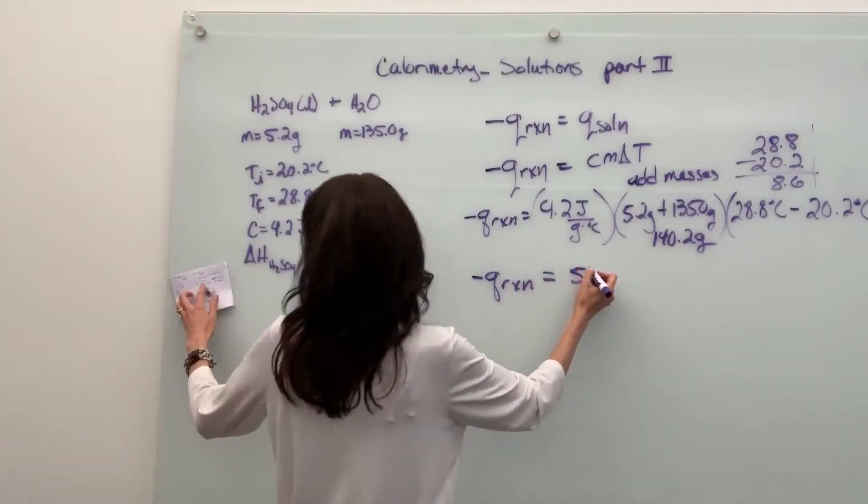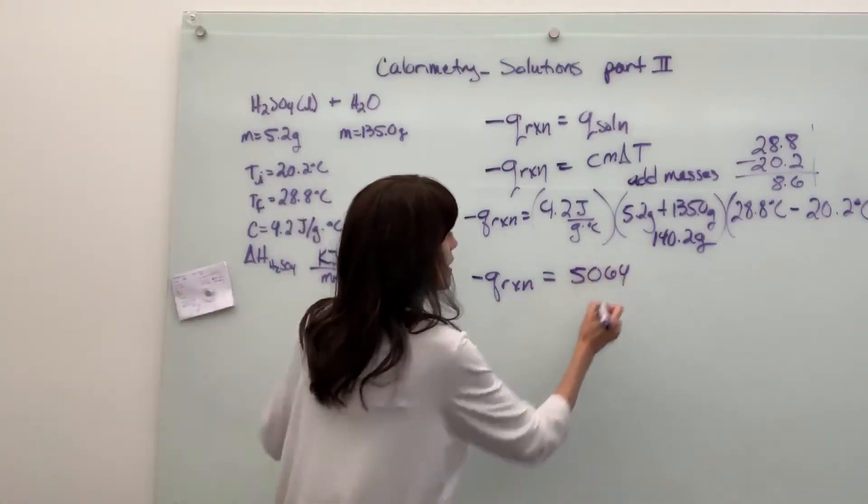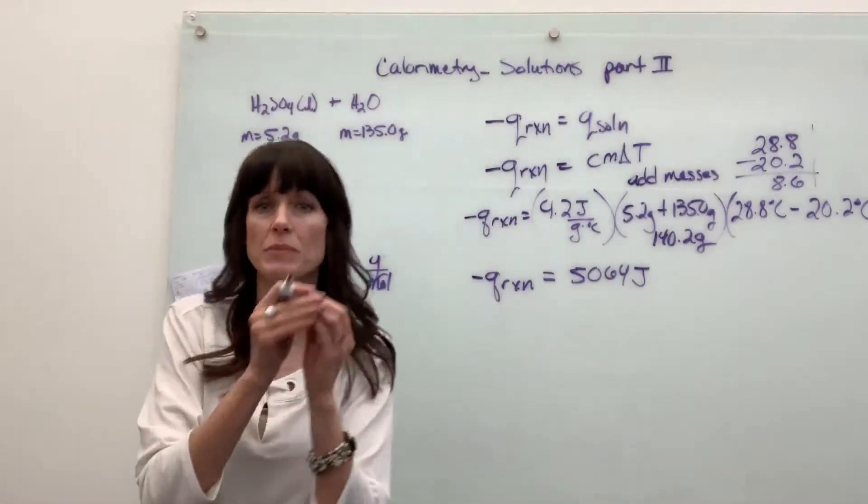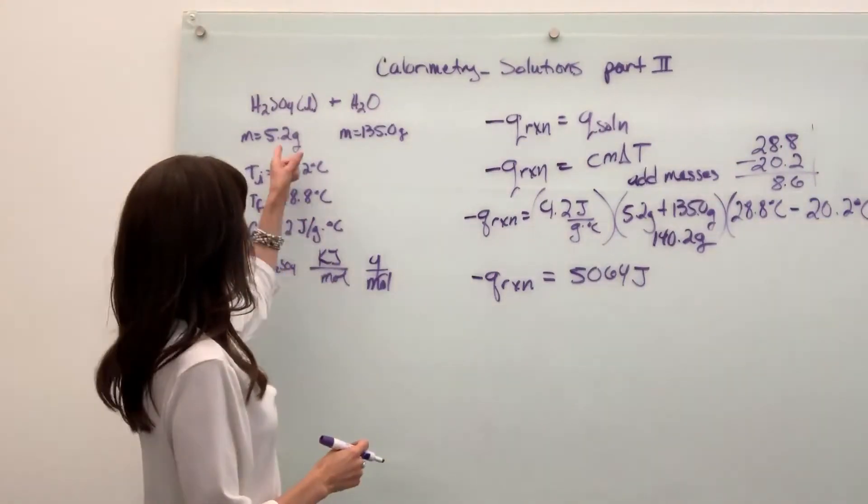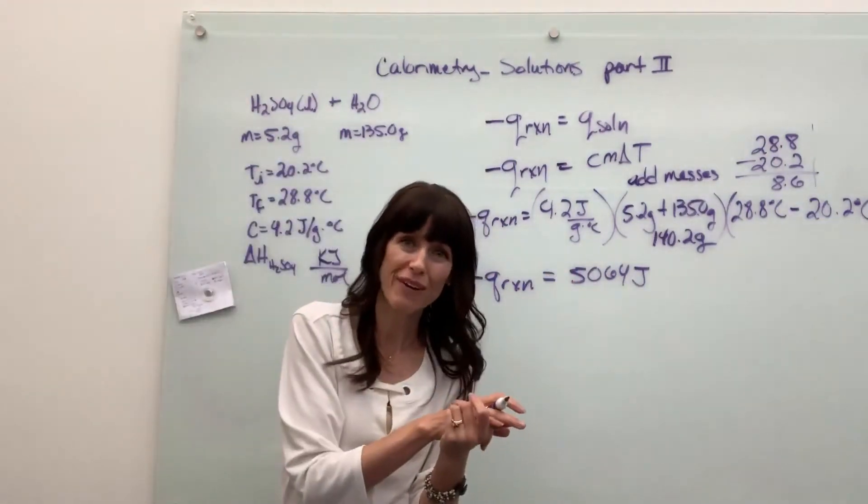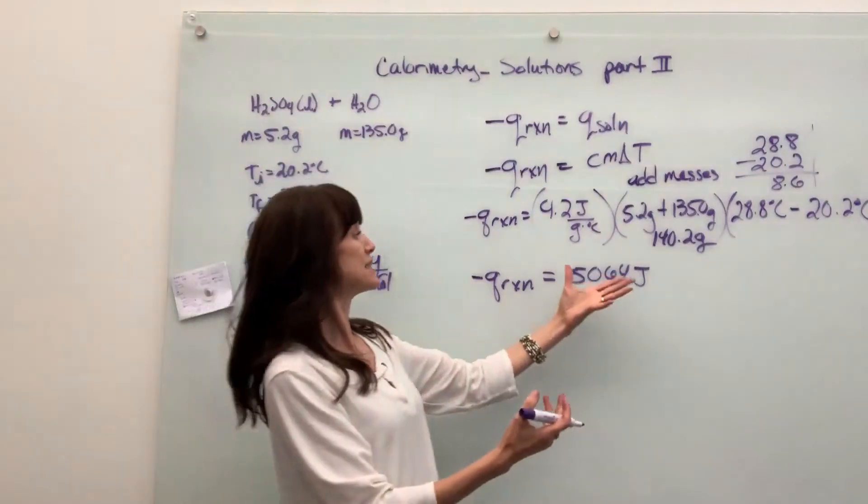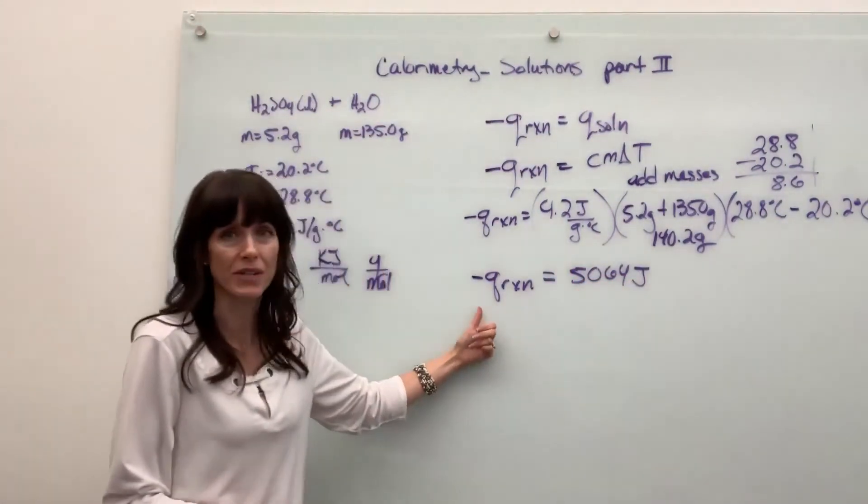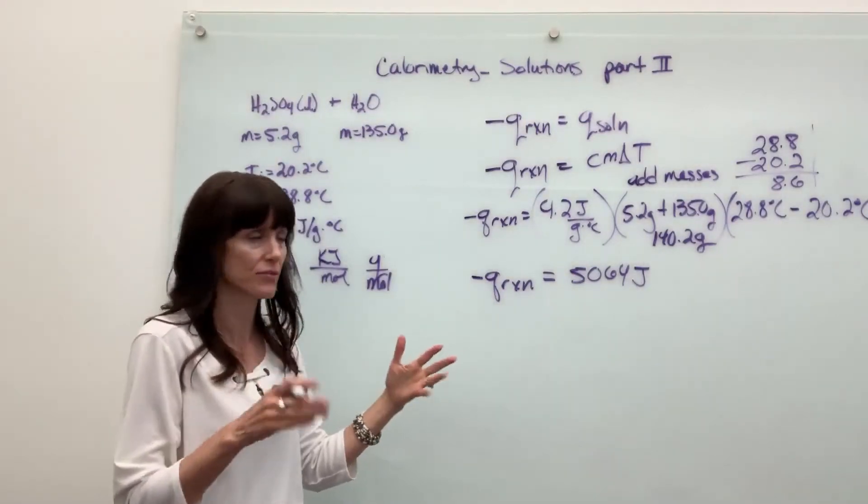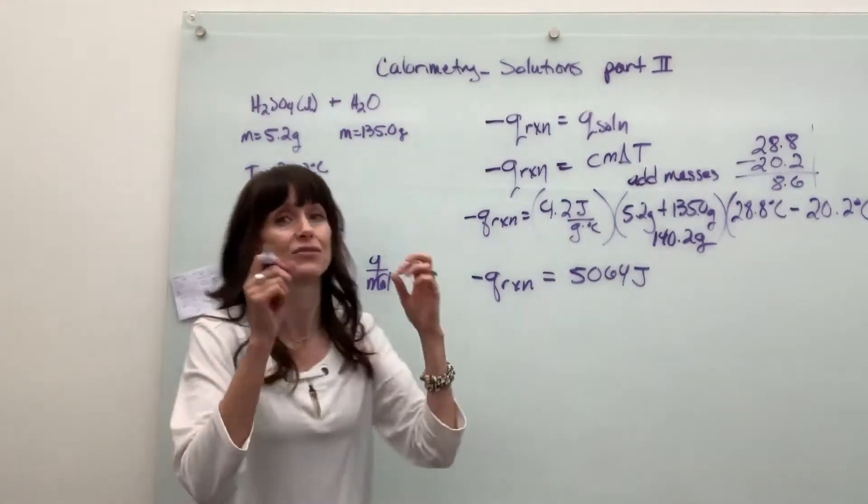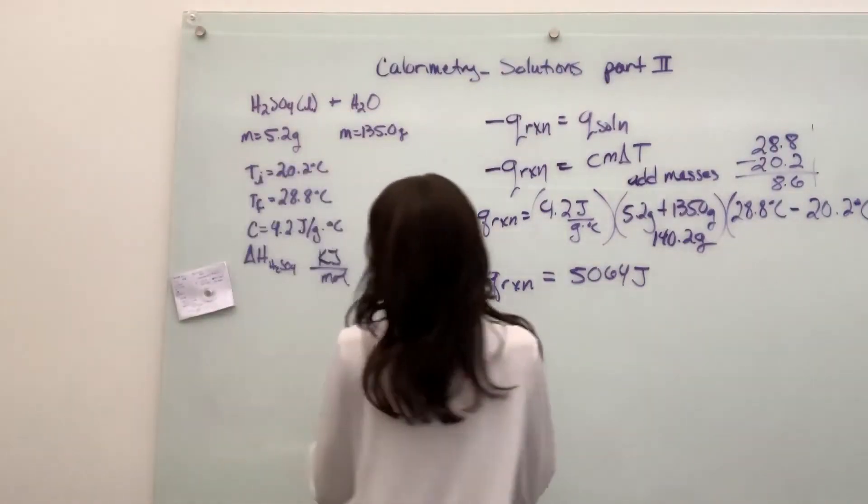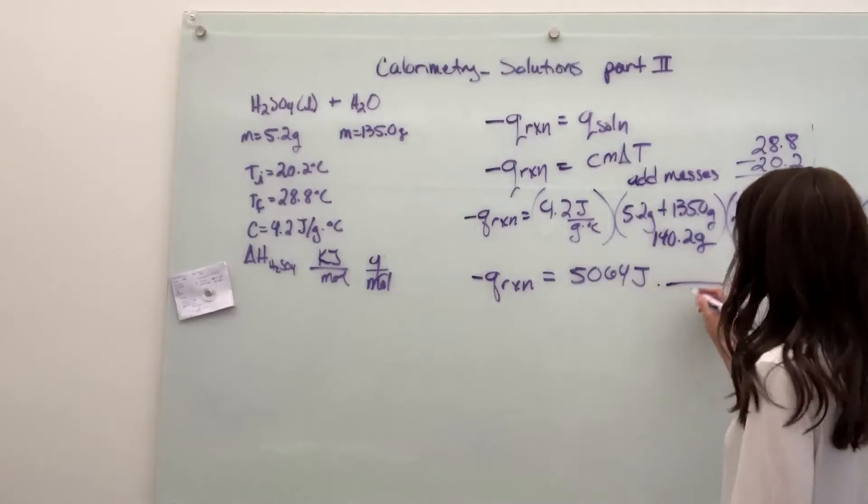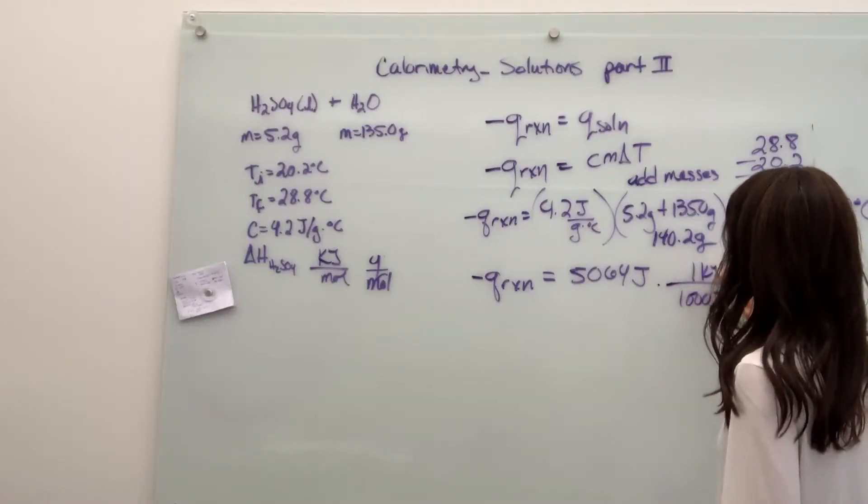So negative Q of the reaction equals, when we multiply all of that, 5064 joules. So in this very particular situation, when I add 5.2 grams of sulfuric acid with 135 grams of water, it releases 5064 joules. Well, they didn't ask me for heat. They didn't ask for a magnitude of energy released. They asked for delta H. Remember delta H is kilojoules per mole. Well, I can convert that to kilojoules.